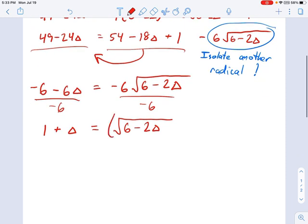Now we're going to square both sides and see where that puts us. Okay, like this. So 1 plus delta squared is going to be 1 plus 2 delta plus delta squared. Remember, this is foiling.